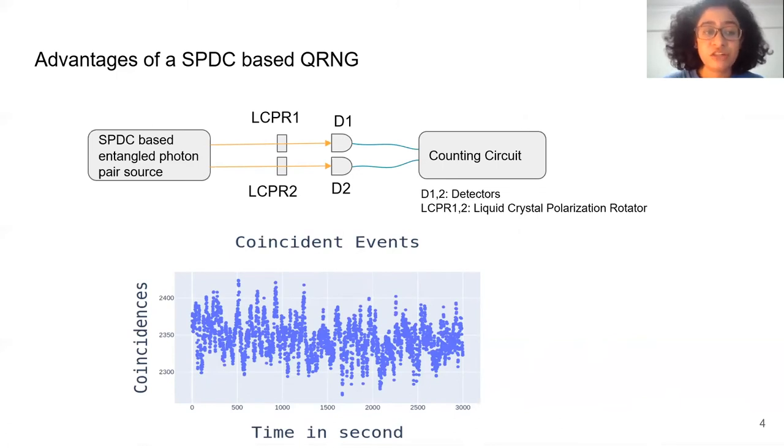From the nature of our source and the SPDC process, we know that coincident events per second follow a Poissonian distribution. Here is a plot of the coincident events recorded at our lab. This is some 3000 seconds worth of data. We can see that even though the source is running in the same setup all the time, there is variation in the output due to quantum shot noise.